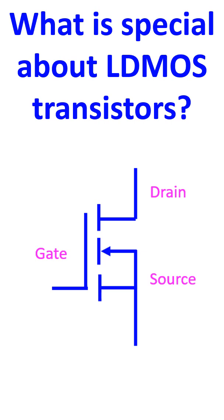The three terminals of an LDMOS are source, gate, and drain. In typical configurations, the voltage on the gate controls the flow of current from the drain to the source. The most common configuration is the common source configuration, in which the source is grounded and the drain is connected to the DC supply voltage. The gate is used to induce a field-enhanced depletion region between the source and the drain.